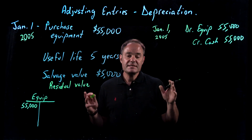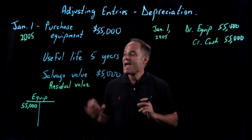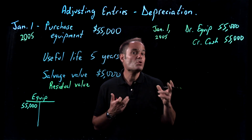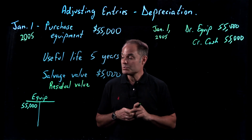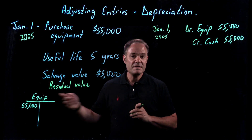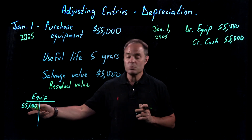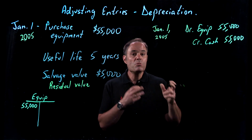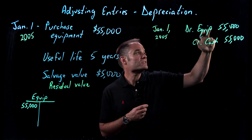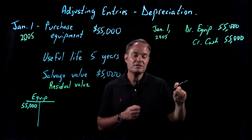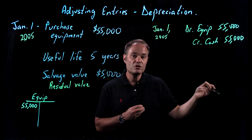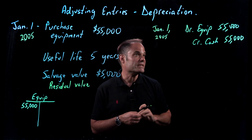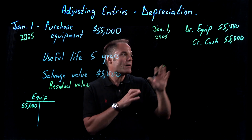Now we've gone through the first year. It's now December 31st, 2005, and the company has used up some of this machinery. The equipment is no longer worth $55,000 — a piece of equipment that's a year old isn't worth what it was worth brand new, so we have to reflect that and show its value has declined. More importantly, there's no expense on the income statement yet to show we've used this equipment to generate revenue.